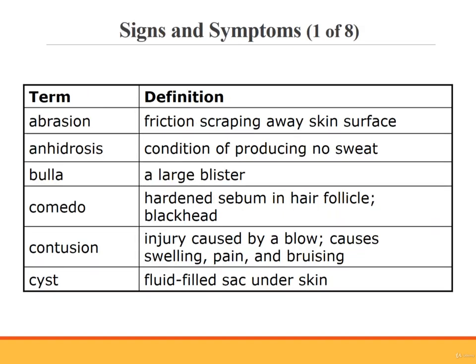The following slides describe some of the signs and symptoms of injury, or pathology, of the integumentary system. An abrasion is a scraping away of the skin's surface by friction. Imagine that you're riding a bike and you fall off, and you scrape your elbow along the concrete below — that's an abrasion. Anhydrosis is a very serious condition in which the body does not produce enough sweat. This is very dangerous in the heat of the summer, when the body cannot naturally lower its temperature by sweating.